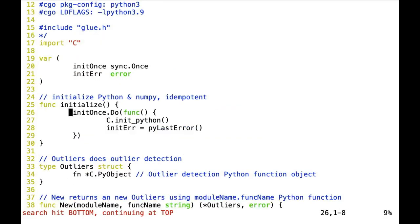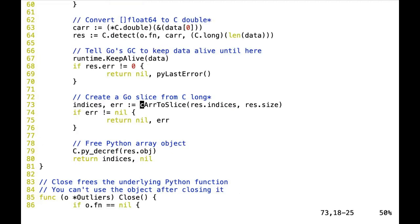Now we can tell Python we're done with what you did, we're done with the memory that you allocated. So we decrement the reference counter for the NumPy array that was the result of calling the detect function in the Python module, and return the indices. And now we have the data.